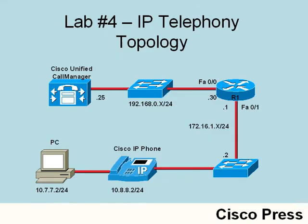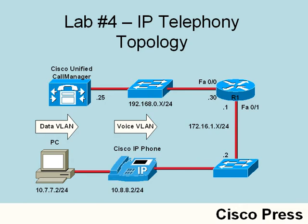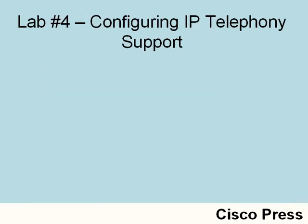Consider the topology on screen. A PC can send traffic into the data VLAN while plugged into a Cisco IP phone simultaneously. That Cisco IP phone sends traffic from a voice VLAN, and traffic from both VLANs travels into the Catalyst switch on a single access port. Let's take a look at the syntax we're going to use to start optimizing this port.